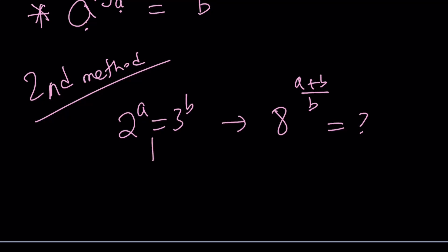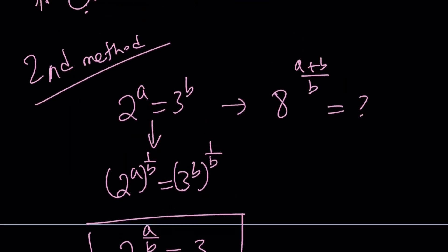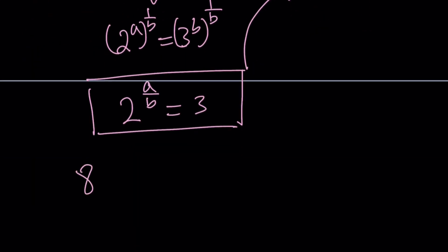First of all, we're going to raise both sides to the power 1 over b here. The purpose of doing that is to isolate the 3 and also to get 2 to the power a over b. That's what we get from here, 2 to the power a over b. Not only that, it also equals 3. Now, how do you use that? We're going to use that here. But let's manipulate that a little bit first.